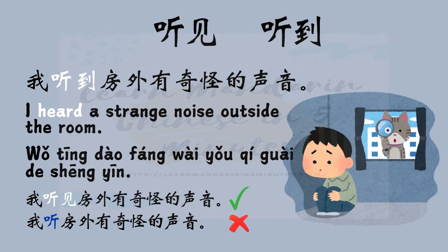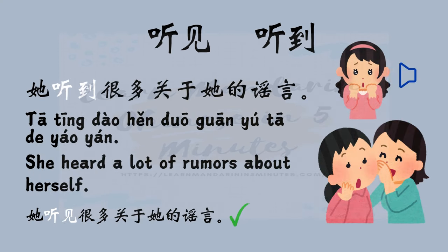我听到房外有奇怪的声音 — I heard a strange noise outside the room. For this sentence, you can also say 我听见房外有奇怪的声音. But you cannot say 我听房外有奇怪的声音 — this is wrong. Another example: 她听到很多关于她的谣言 — She heard a lot of rumors about herself. You can change 听到 to 听见, so the sentence becomes 她听见很多关于她的谣言.